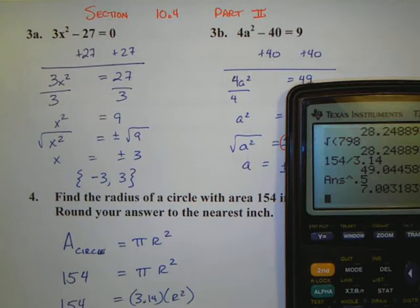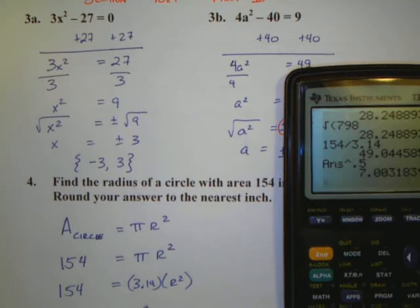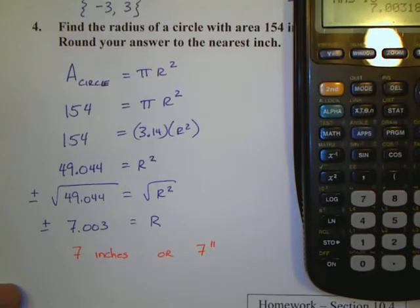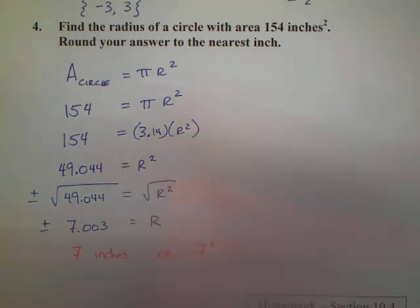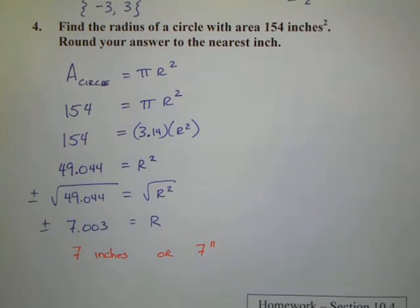Whenever we have a story problem, we have to make sure we answer the question. It says find the radius of the circle. Well, radius can only be positive. So we're going to throw out our negative answer. Second, it says round to the nearest inch. And so we're going to have to say the radius is 7 inches. Or you could write it with a symbol 7 inches in that capacity.